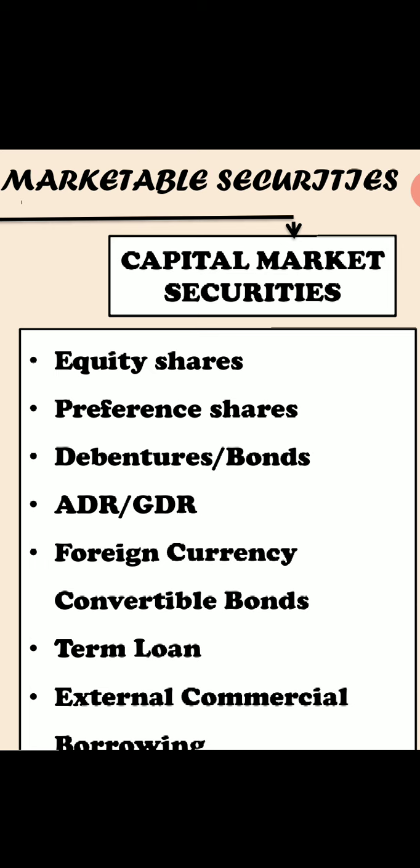An interest-bearing bond issued by a power company is an example of a debenture. A debenture is a type of debt instrument unsecured by collateral. Since debentures have no collateral backing, they must rely on two aspects: the creditworthiness and the reputation of the issuer. Essentially, a debenture is an acknowledgement of the debt the organization has taken from the public at large.